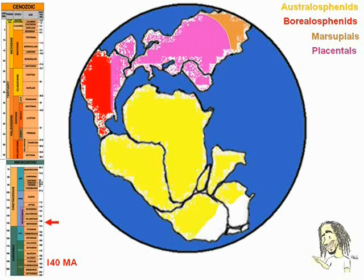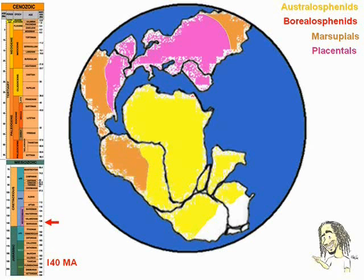In a short time, the placentals dispersed to the entire north of the planet. The marsupials also dispersed, reaching North America and South America some million years after, over the terrestrial connection that still existed between them.